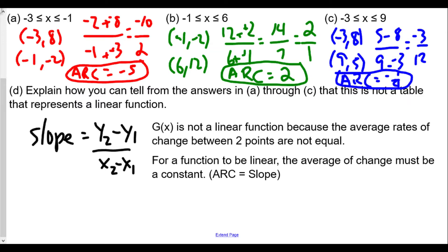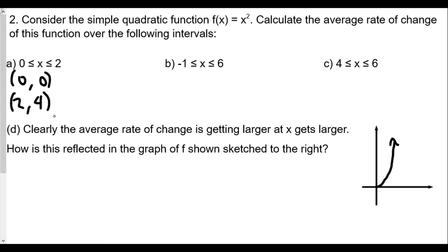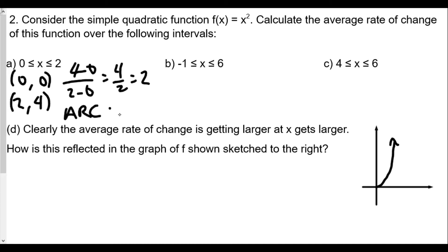Now, question 2: consider the simple quadratic function f(x) equals x squared. Calculate the average rate of change over the following intervals. For the first interval, when x equals 0, f(0) equals 0 squared which is 0; when x equals 2, f(2) equals 4. The average rate of change is 4 minus 0 over 2 minus 0, which equals 4 over 2, or 2.